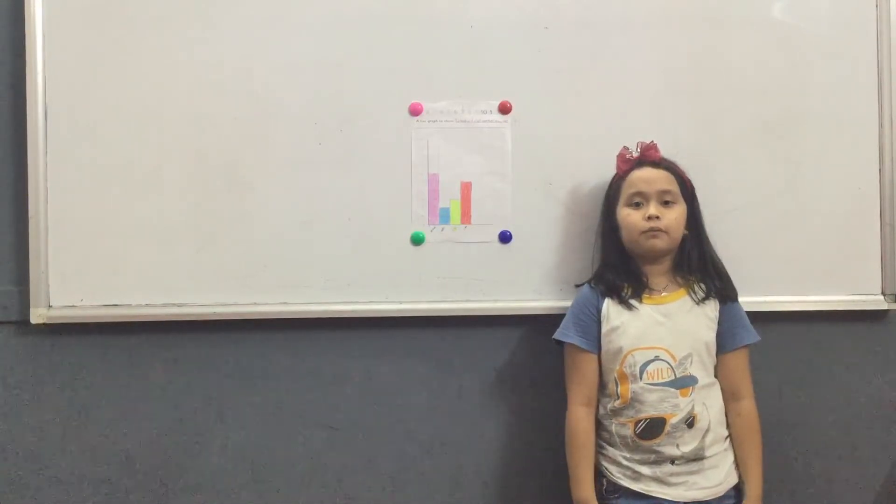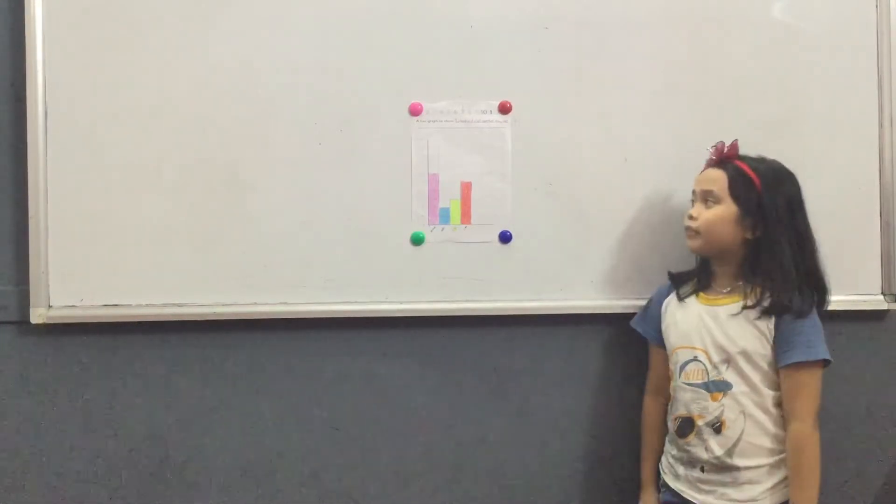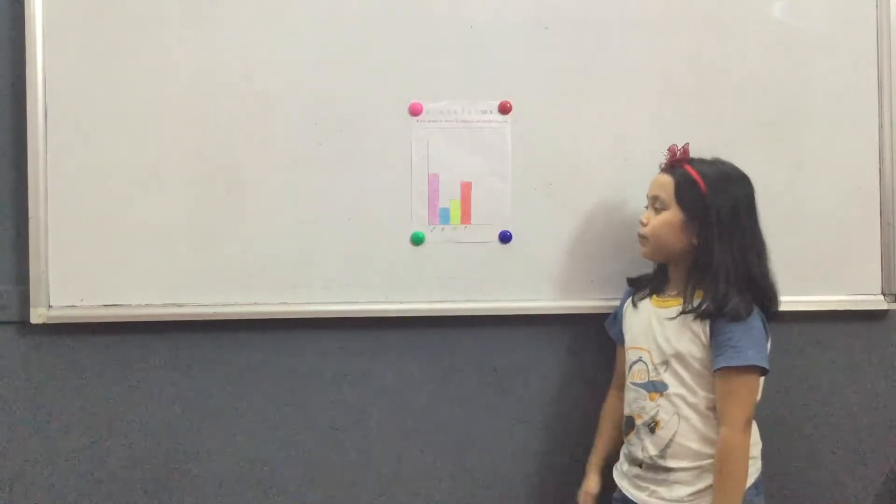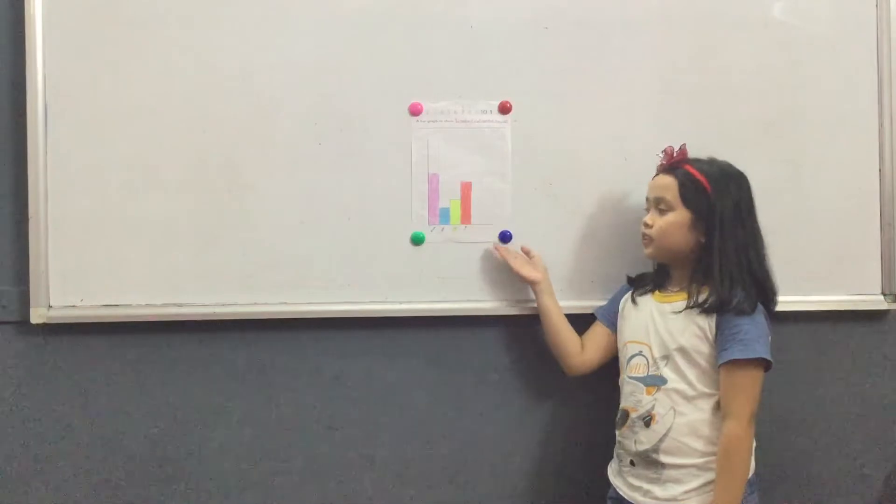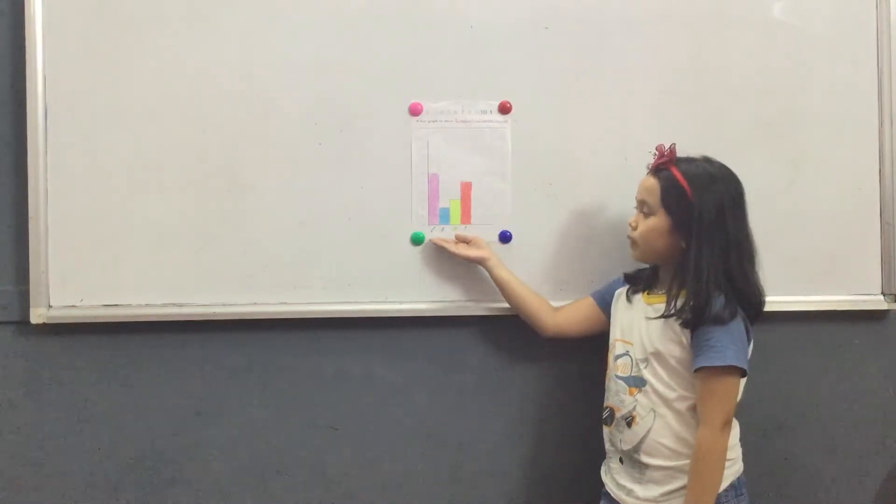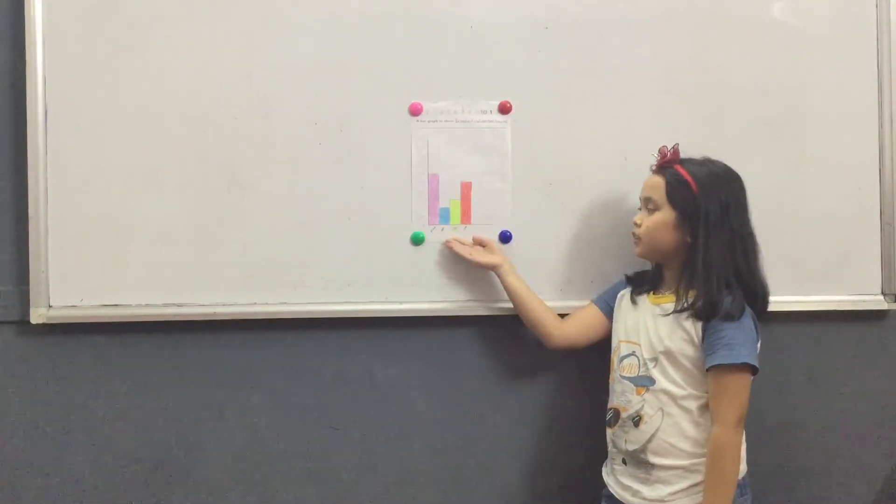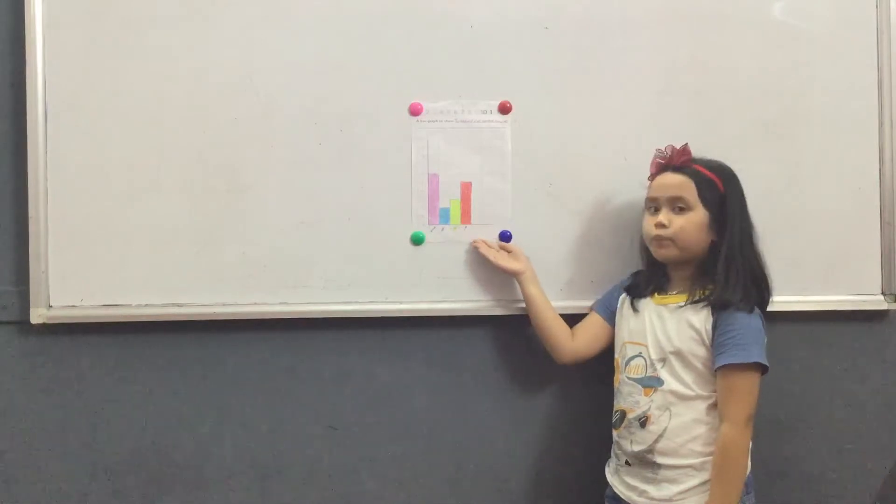Today I'm going to talk about my progress. This progress shows the number of pencils, rulers, backpacks, and pens. There are 6 pencils, 2 rulers, 3 backpacks, and 5 pens.